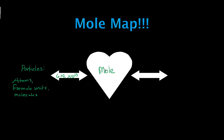If we start at the mole and we want to get to atoms, we are going to use Avogadro's number, which is 6.02 times 10 to the 23rd. Now if we want to get to mass — and the units of mass is always grams in chemistry — we are going to use molar mass. So if we start with atoms of oxygen and need to get to grams of oxygen, we use Avogadro's number to get to moles of oxygen, and then molar mass of oxygen to get to grams.